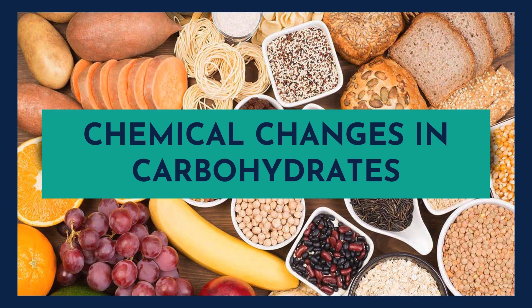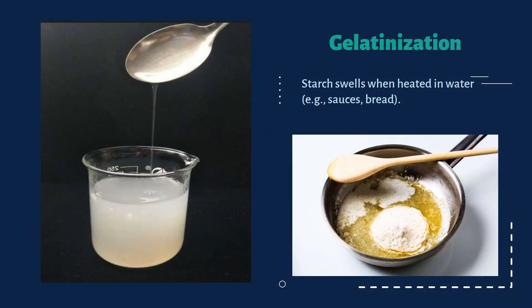Carbohydrates undergo various changes during cooking and storage. Let's start with gelatinization. This happens when starch absorbs water and swells under heat, making rice and pasta soft and also making sauces thick. As you can see in this diagram, starch is swelling when heated in water.